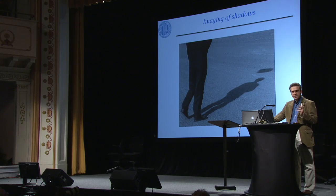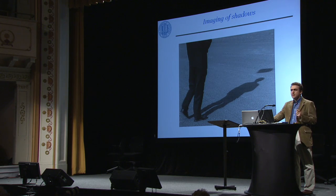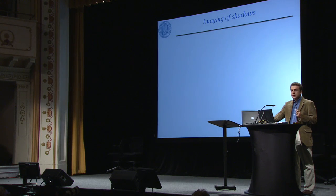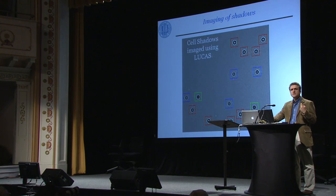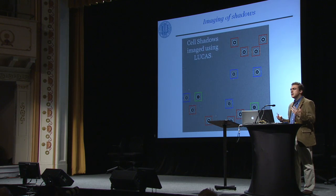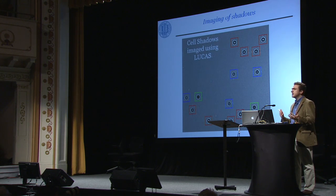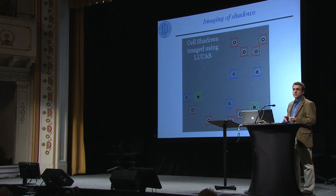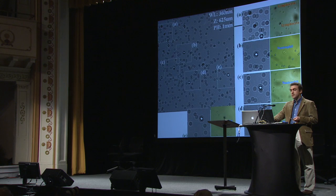Unlike our own shadow on a sunny day, which is pitch dark and doesn't show any useful information, cell shadows are very useful. They contain a texture that is the fingerprint of the cell. If you detect this fingerprint — which we technically call a hologram — you would be able to detect the cell type and understand if there was a deformation on it, or you could reconstruct a microscopic image of the cell from these simple cell shadows imaged with our devices.